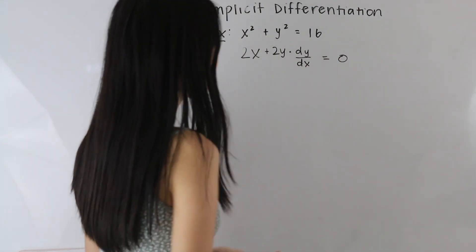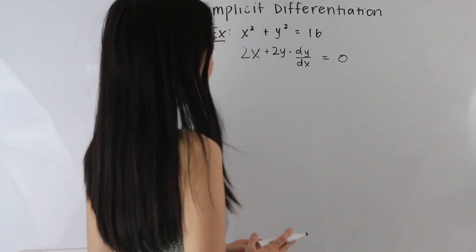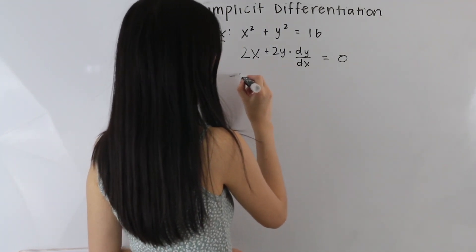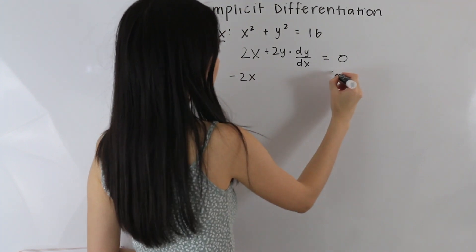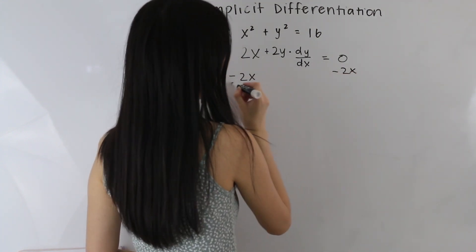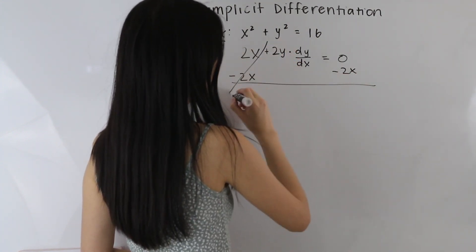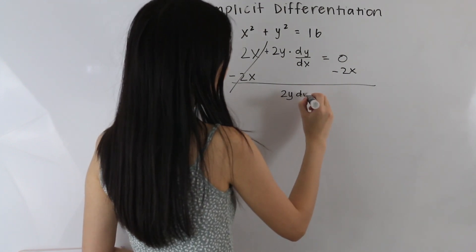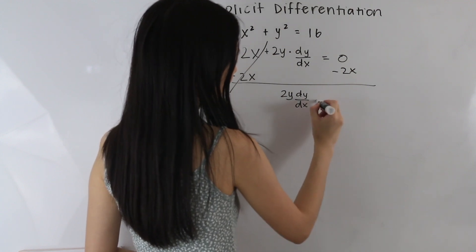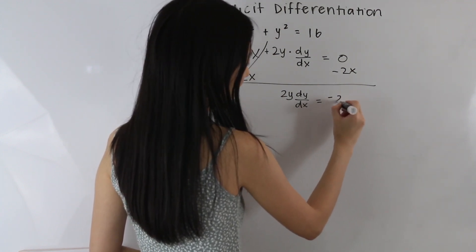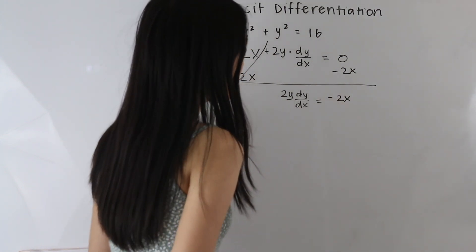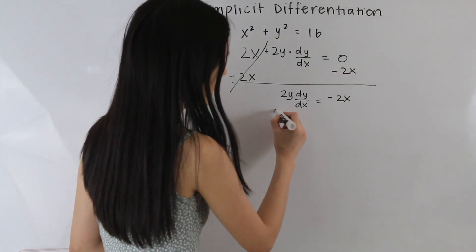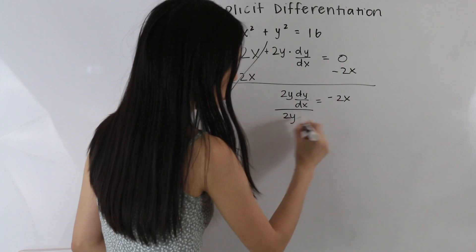The next step is to move all of our terms that do not contain dy/dx onto the other side. So let's go ahead and subtract both sides by 2x. These two x's cancel out, and we are left with 2y dy over dx on the left hand side and negative 2x on the right hand side. From here we want to solve for dy/dx, so we're going to divide both sides by 2y.